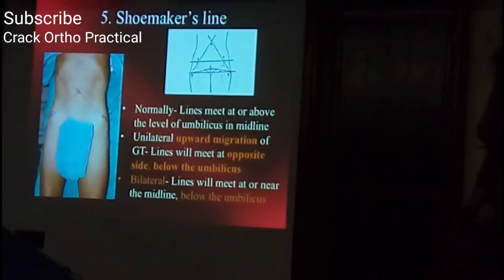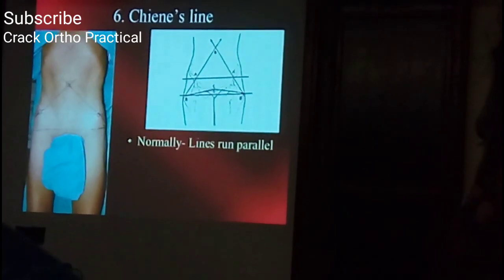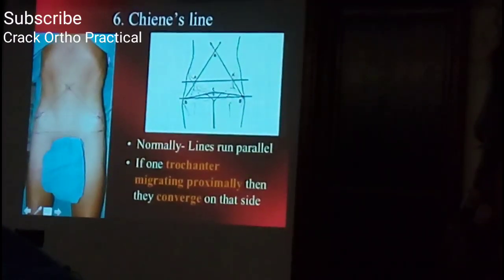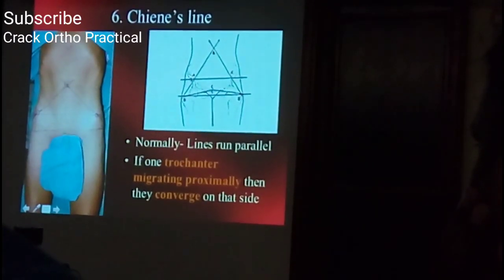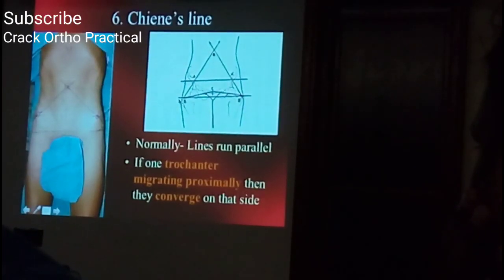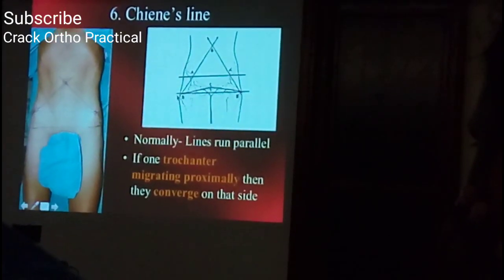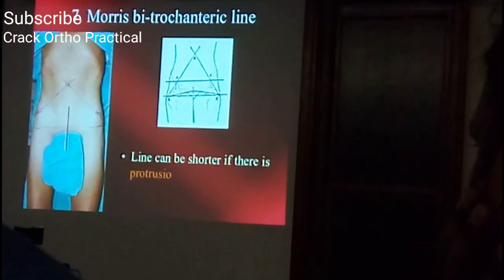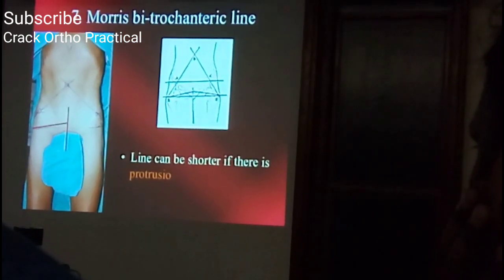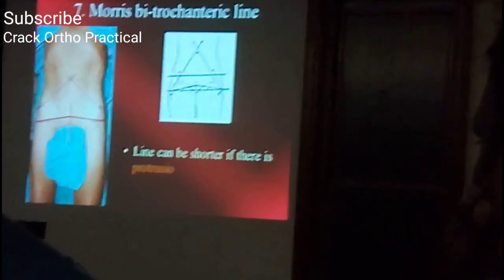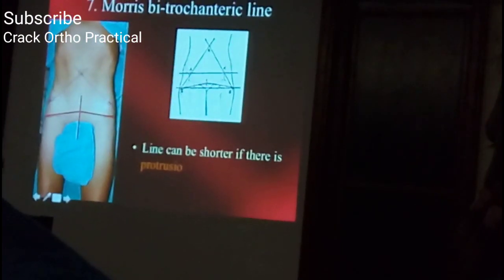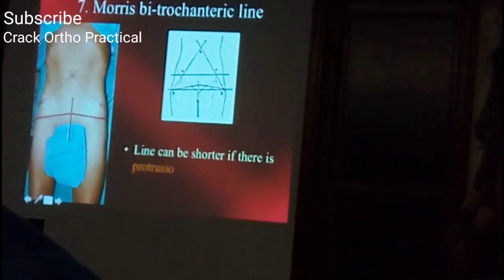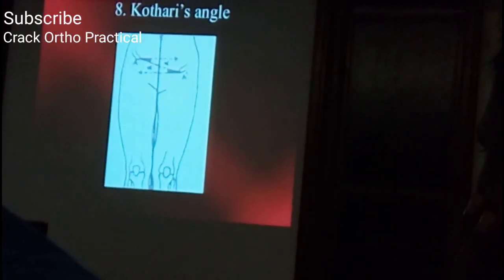The bitrochanteric line (Morris bitrochanteric line) joins both trochanters parallel to the line joining both antero-superior iliac spines — normally these two lines remain parallel. If they converge or diverge, the greater trochanter has moved up on the converging side. This line can be shorter if there is protrusion acetabuli or central dislocation of the hip.